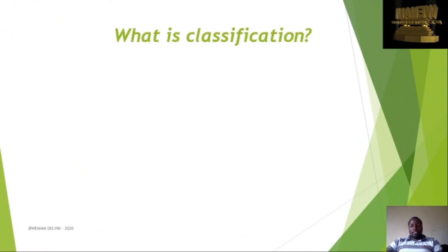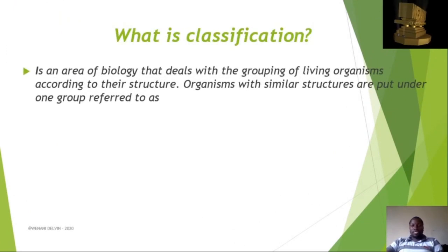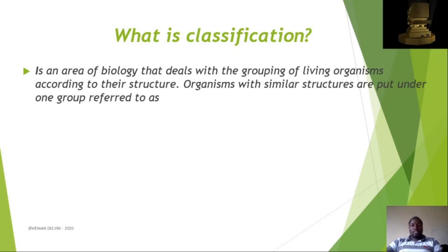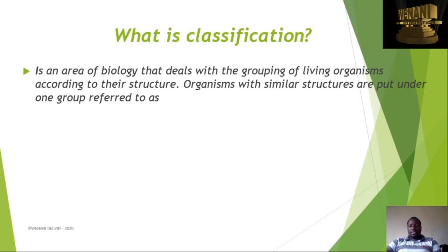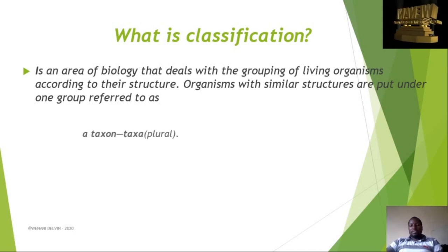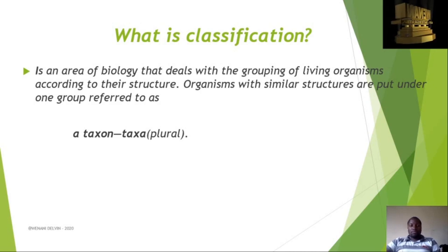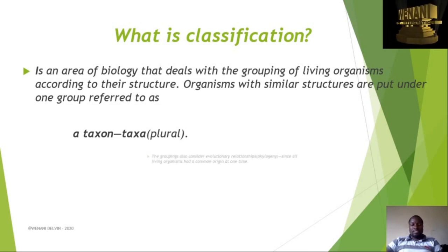So what is classification? Classification is an area of biology that deals with grouping of living organisms according to their structure. Organisms with similar structures are put together, while those with different structures are separated. That group of organisms with almost similar features is called a taxon. A single group is a taxon, but many groups are called taxa.